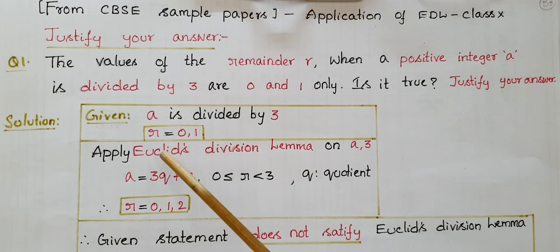Apply Euclid's division lemma on a and 3. Then a equals 3q plus r, because here b is 3. It is divided by 3, so a equals 3q plus r.